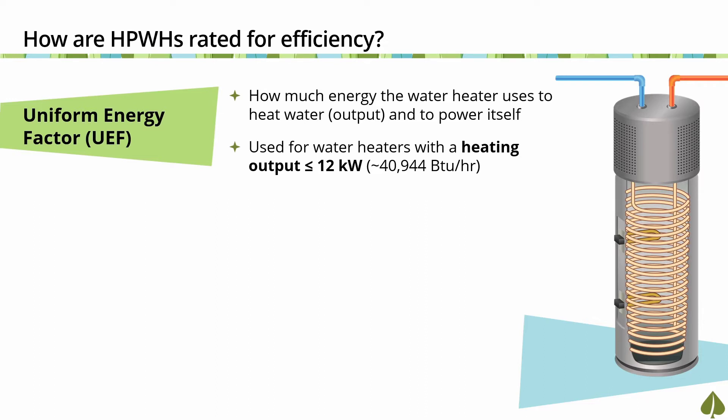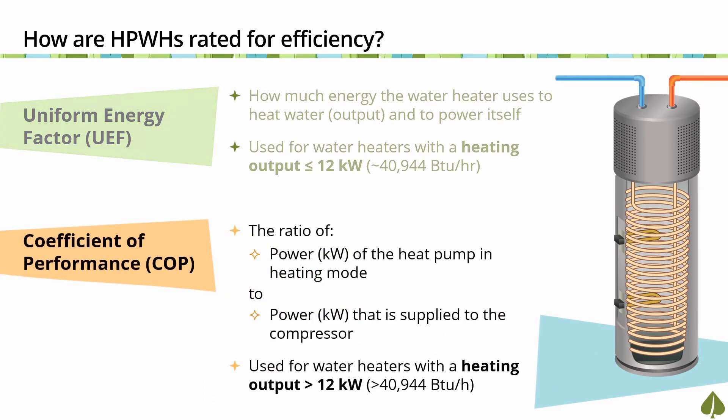The second metric is Coefficient of Performance, or COP. COP is a measure of a heat pump's efficiency and indicates the ratio of power in kilowatts of the heat pump in heating mode, or in cooling mode, to the power in kilowatts that is supplied to the compressor. COP is the metric used for water heaters with a heating output greater than or equal to 12 kW, or 12,000 watts. The higher the COP, the more efficient the heat pump.